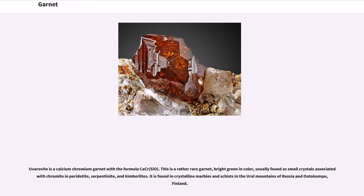Uvarovite is a calcium-chromium garnet with the formula Ca₃Cr₂(SiO₄)₃. This is a rather rare garnet, bright green in color, usually found as small crystals associated with chromite in peridotite, serpentinite, and kimberlites. It is found in crystalline marbles and schists in the Ural Mountains of Russia and Outokumpu, Finland.